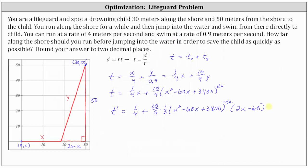So if we set the derivative equal to zero, this gives us x is approximately 18.45, and this would be meters. Notice how this is the distance that you would run along the shore before jumping into the water to swim to rescue the child in order to minimize the rescue time. So as a complete sentence, you should run 18.45 meters along the shore before jumping in the water.